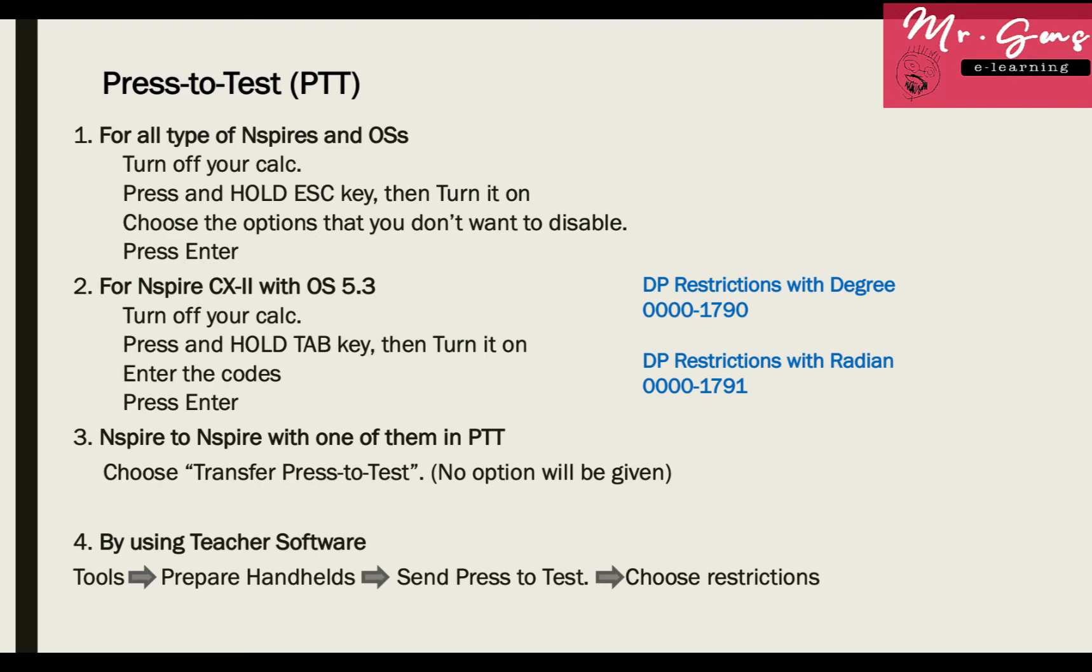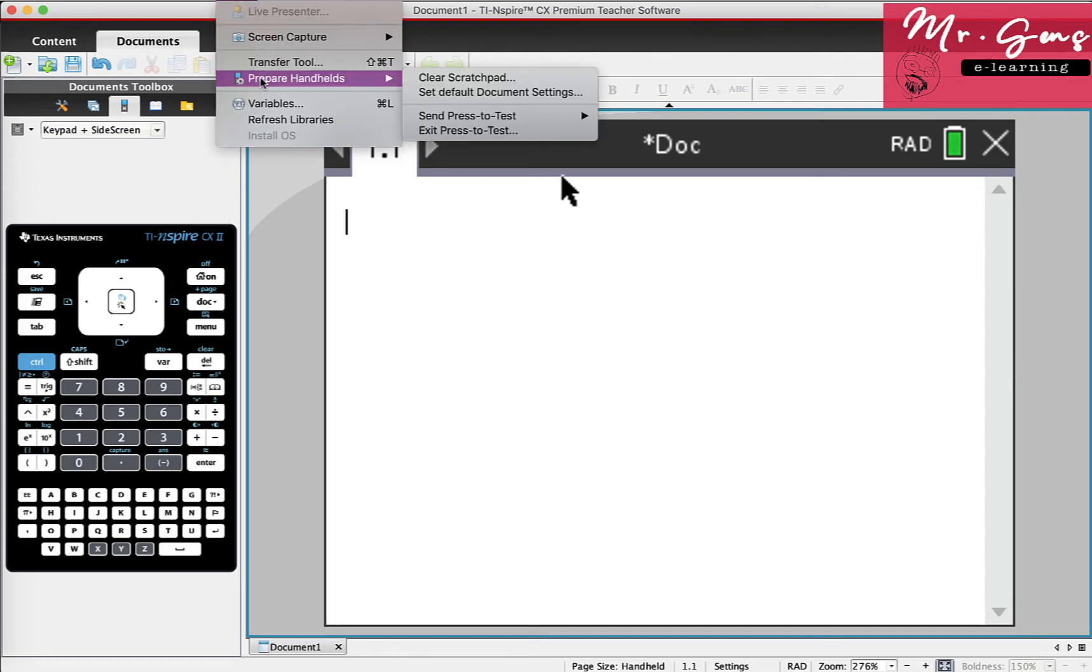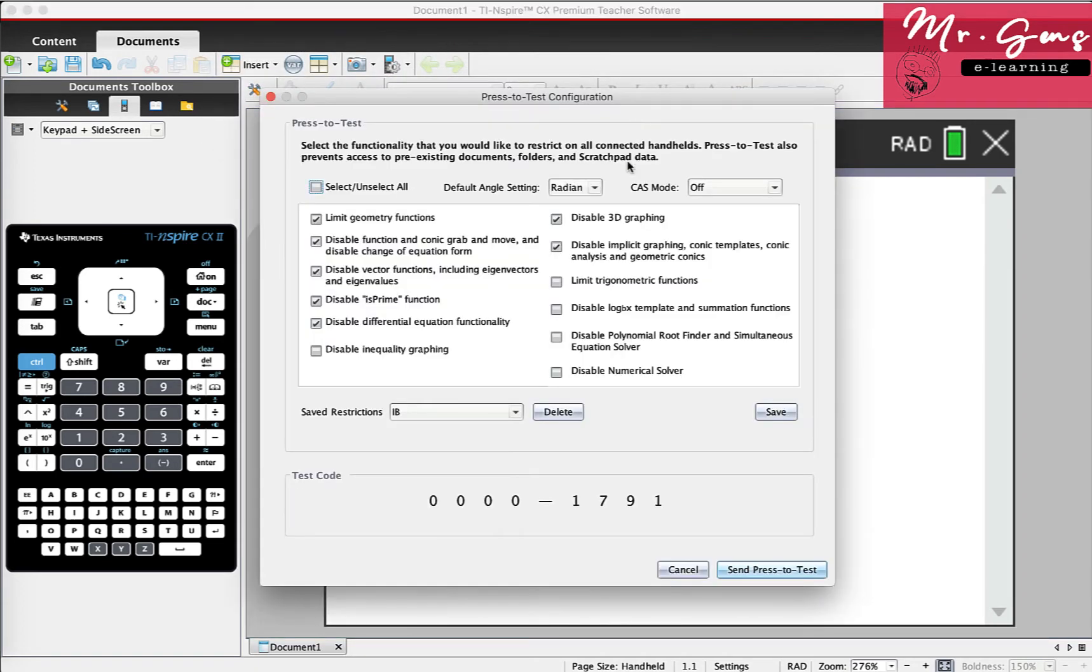For the last method, you must have teacher software. Let's see how to do it. Connect your Nspire to your computer. Click on Tools, go to Prepare Handhelds, and Send Press to Test. Here you can choose Test Mode Restrictions.